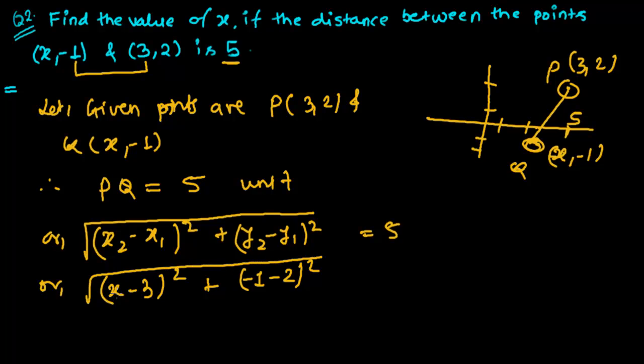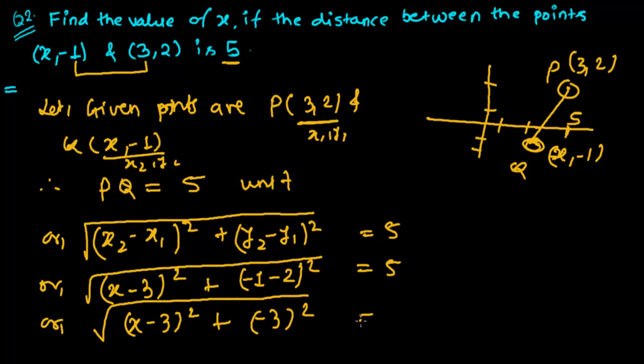Here x₂ minus x₁. So this is x₂ minus x₁. And this is y₂ minus, 1 is y₂ minus y₁. This is 2 is, this I am supposing as x₁ and y₁. And this I am supposing as x₂ and y₂. And I am applying this formula. Equals to 5.